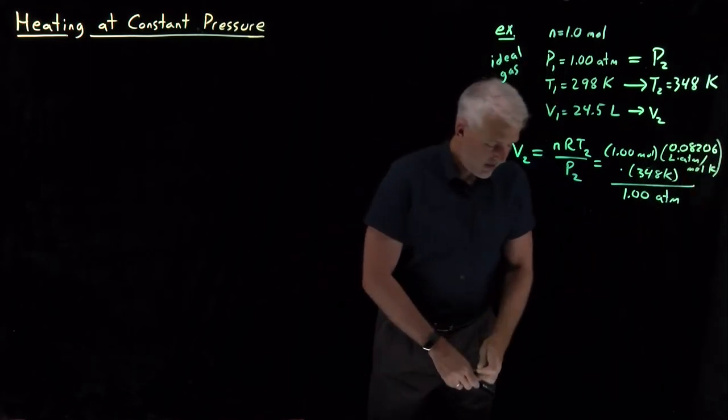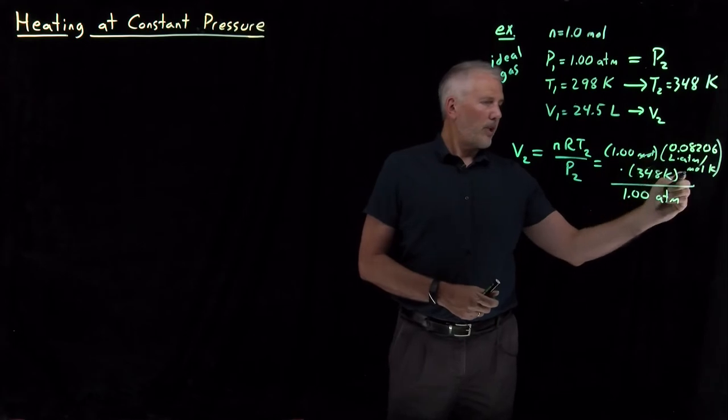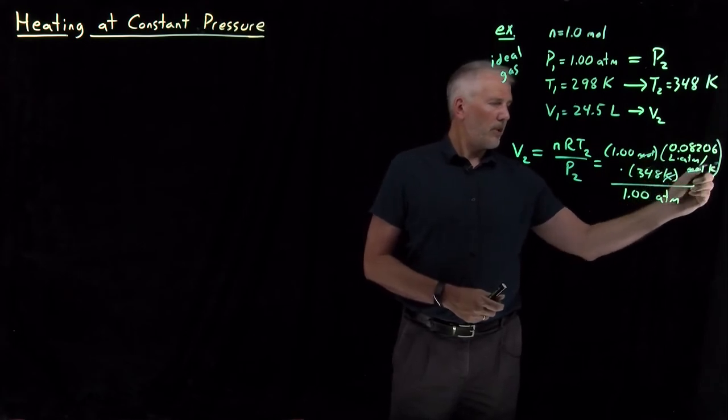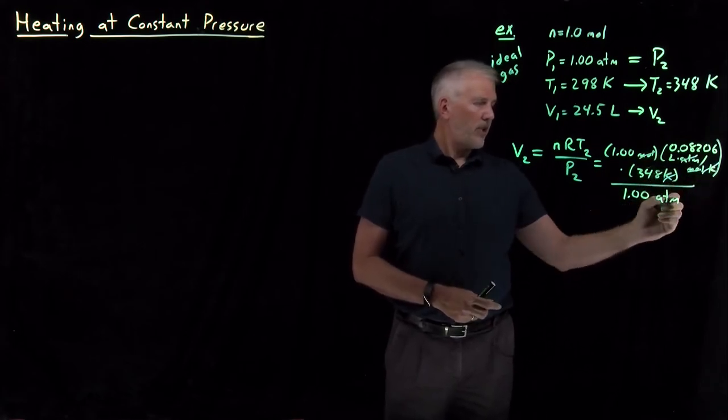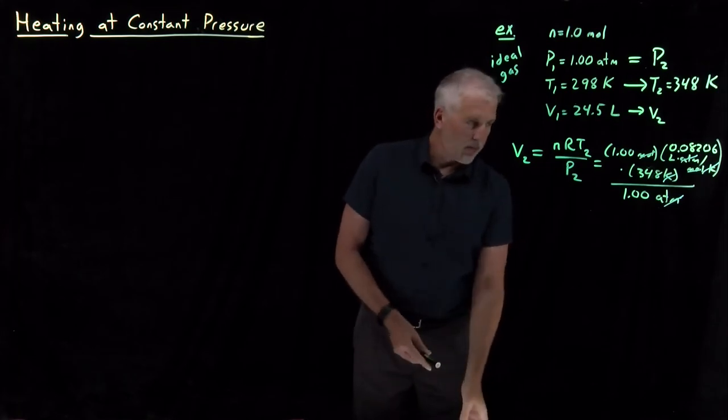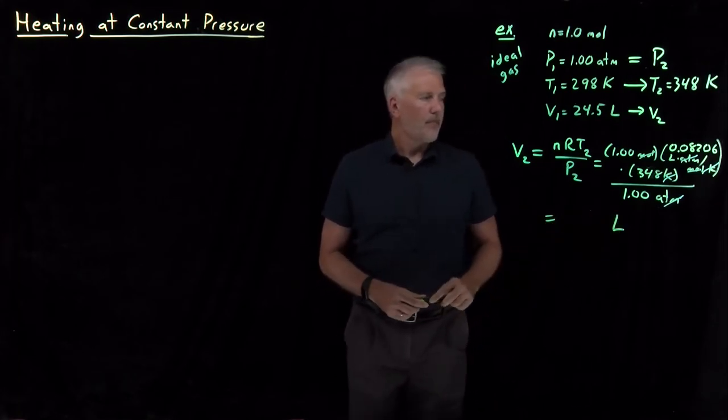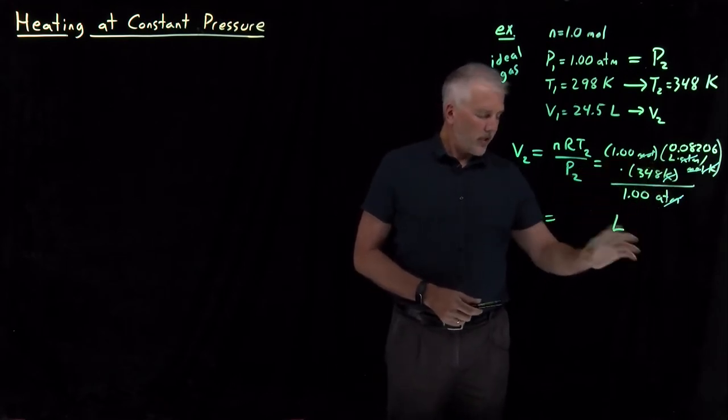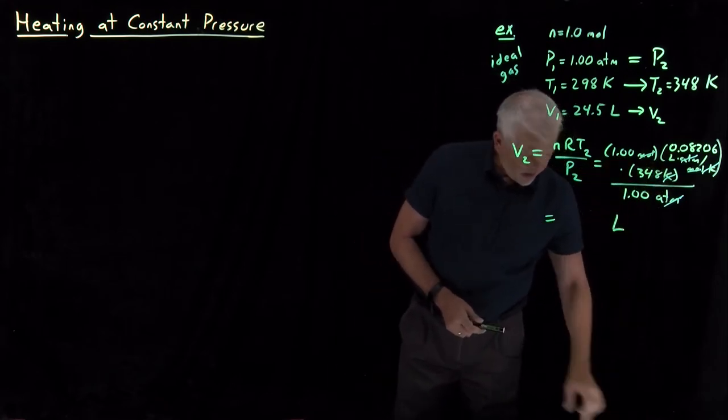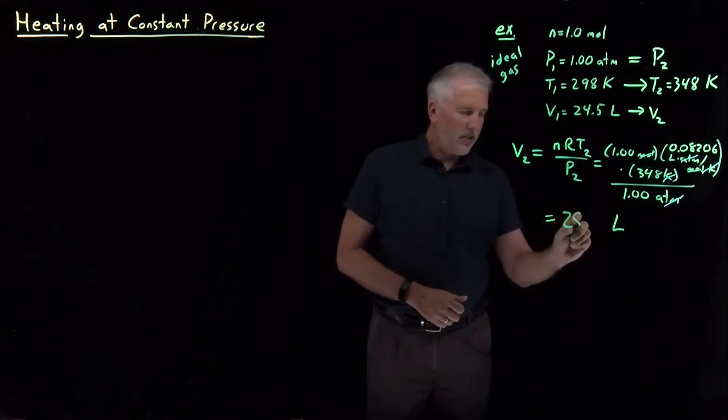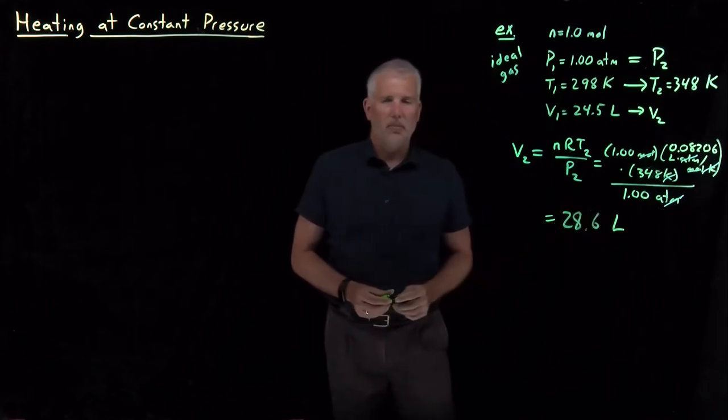When I check my units, moles will cancel moles, Kelvin will cancel Kelvin, atmospheres will cancel atmospheres, and my answer will come out in units of liters. Plug these numbers into a calculator, which I've already done, and the answer works out to be 28.6 liters.